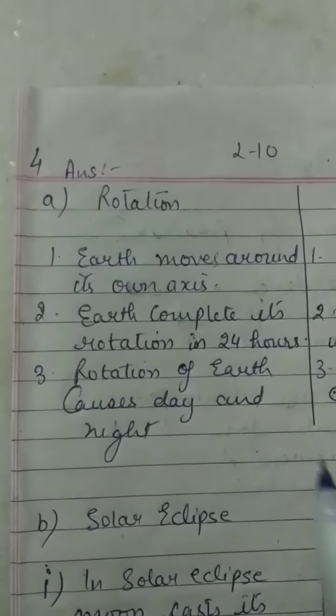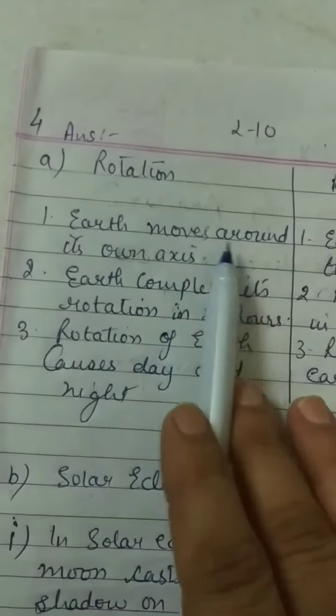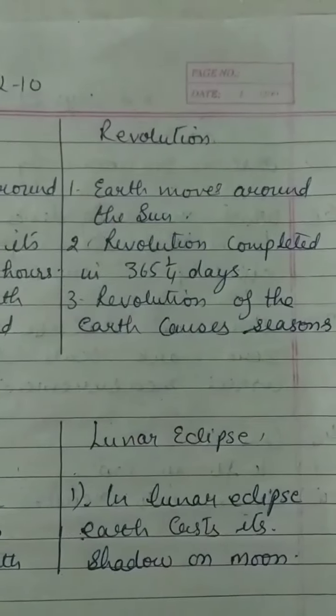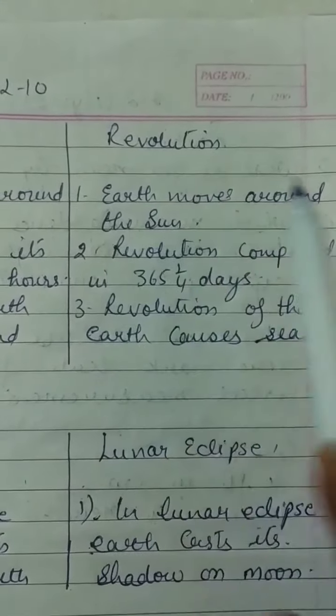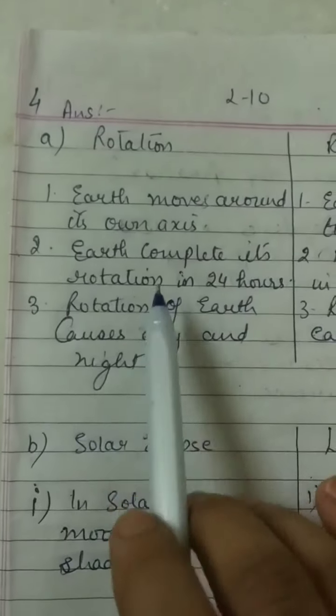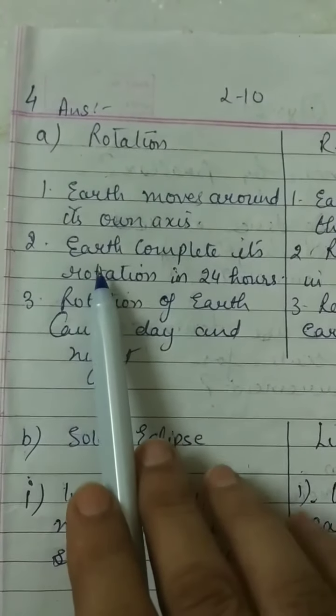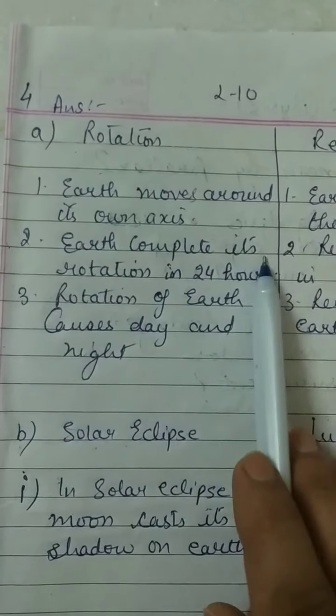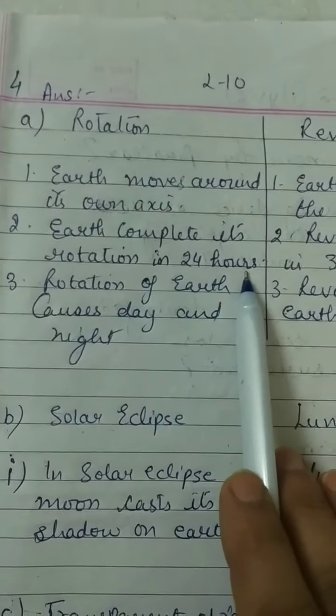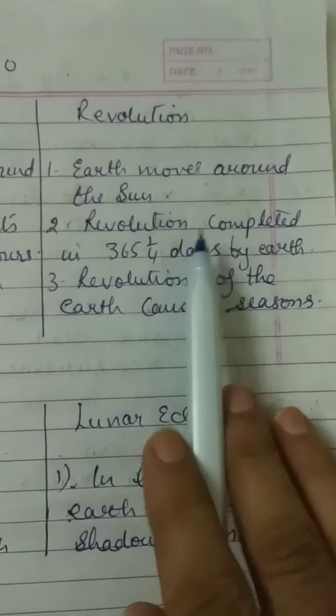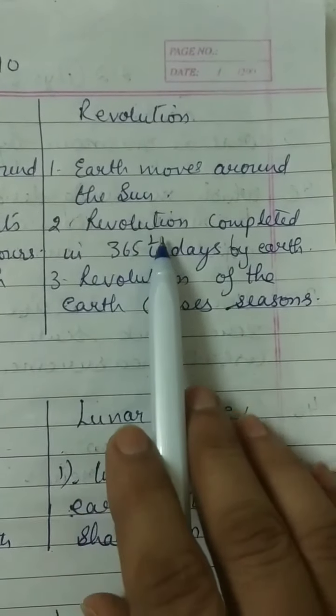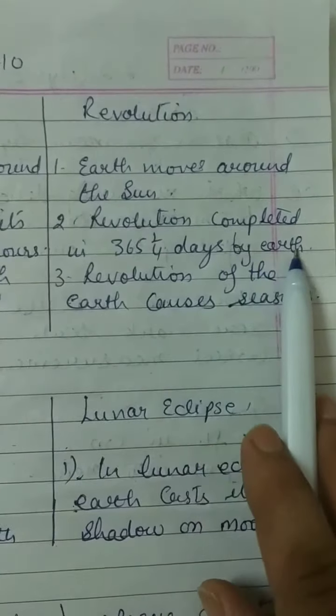Part A: Distinguish between rotation and revolution. Rotation: Earth moves around its own axis. Revolution: Earth moves around the sun. Second point: Rotation, earth complete its rotation in 24 hours. In revolution, revolution completed in 365 and 1 by 4 days by Earth.